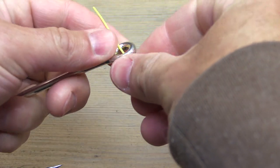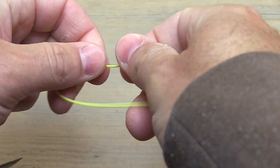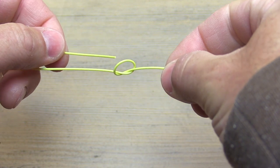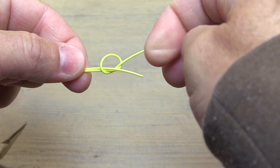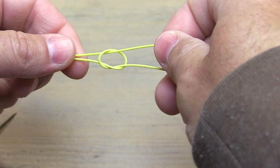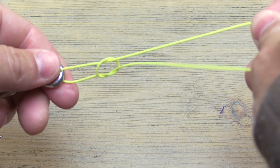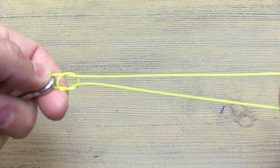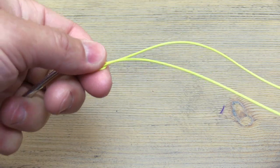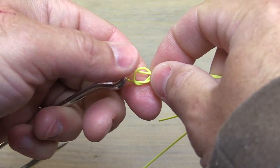Then we're going to take the tag end and just go through the eye of the hook. Then we're going to go through that overhand knot that we tied on that standing line. I'm going to pull this all the way down to the eye but don't pull it tight. Leave yourself an open overhand knot there to work with.